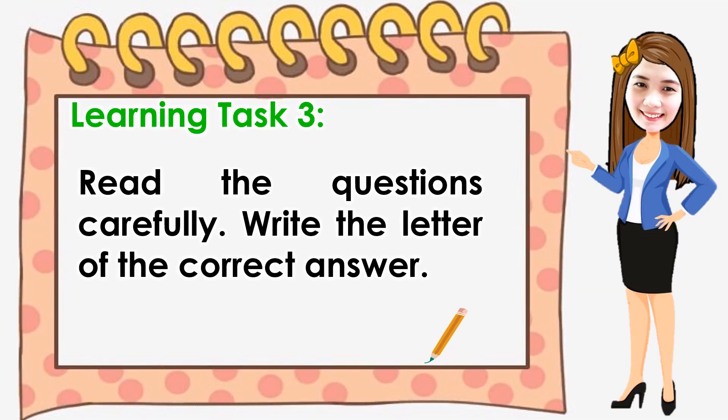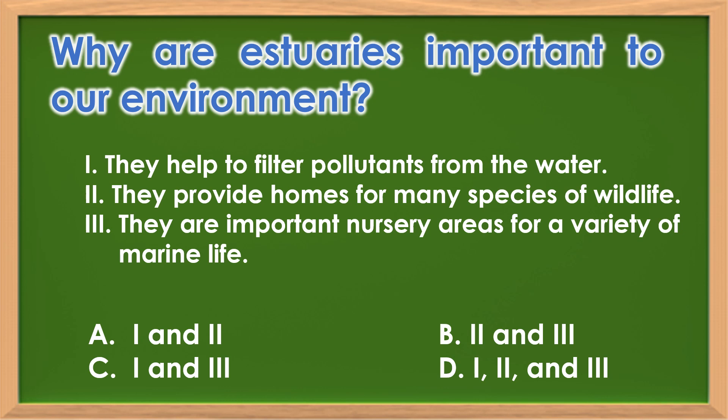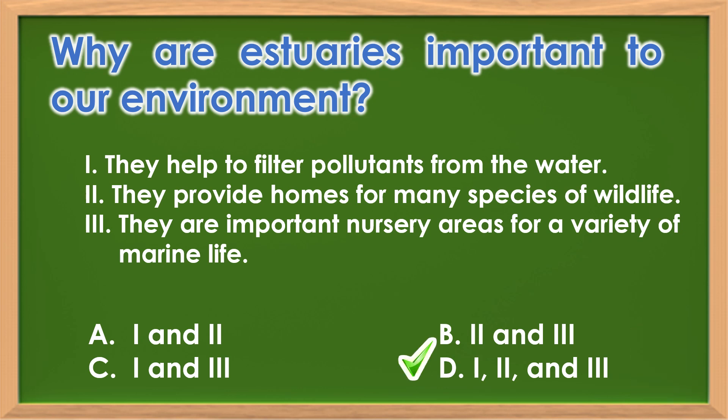For your last activity, read the questions carefully and write the letter of the correct answer. Question: Why are estuaries important to our environment? 1. They help to filter pollutants from the water. 2. They provide homes for many species of wildlife. 3. They are important nursery areas for a variety of marine life. A. 1 and 2, B. 2 and 3, C. 1 and 3, D. 1, 2 and 3. The correct answer is letter D.